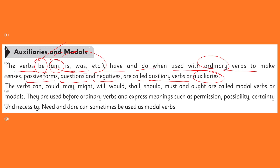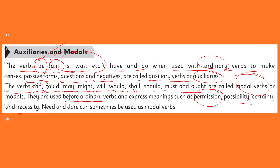On the other hand, the verbs can, could, may, might, will, would, shall, should, must, and ought — when you see them, you will categorize them as modal verbs. They are used before ordinary verbs and express meanings such as permission, possibility, certainty, and necessity. We also have 'need' and 'dare' which can sometimes be used as modal verbs — so 'need to' and various forms of 'dare' are also used as modal verbs.